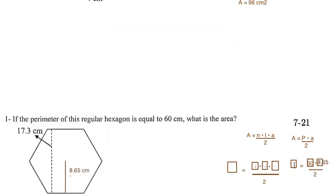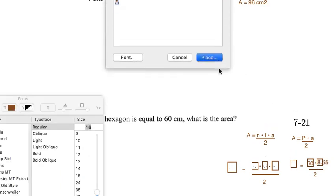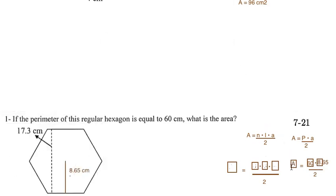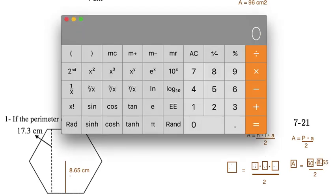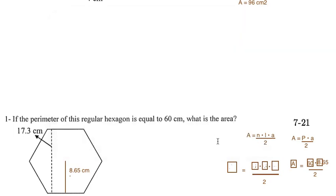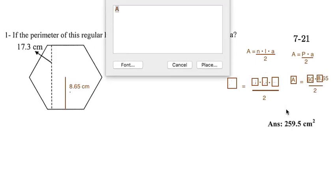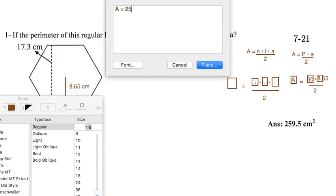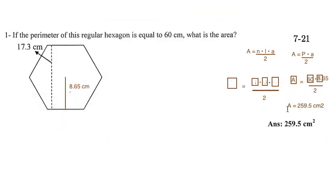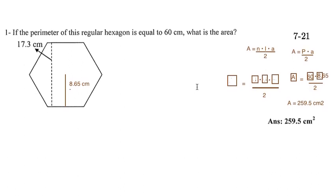Now that all I've got left is one blank, I just have to do this calculation: 60 times 8.65 divided by 2. If you need a calculator, 60 times 8.65 divided by 2 gives you 259.5. So the area equals 259.5 centimeters squared.